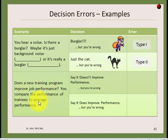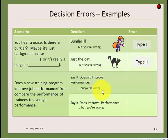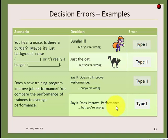One more example: a training program meant to improve job performance. If you say the program doesn't improve performance but it actually does, you've retained the null falsely — a Type II error. If you say it does improve performance when it doesn't, that's a Type I error — a false positive. That concludes the three follow-up concepts to the t-test.